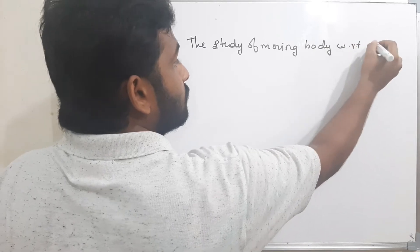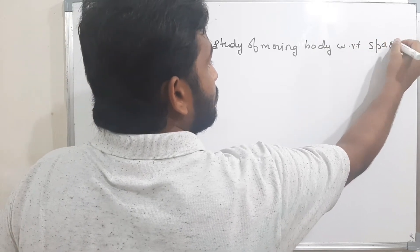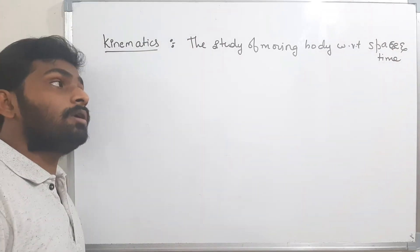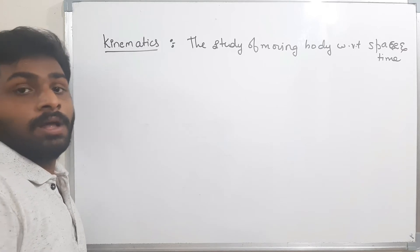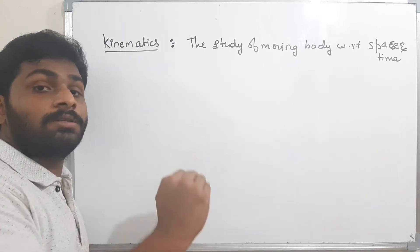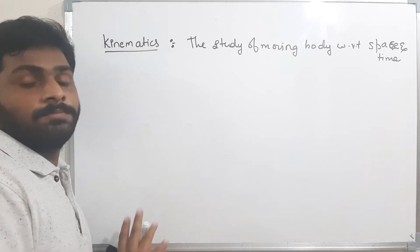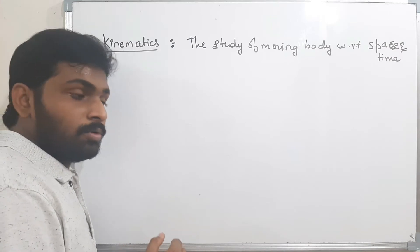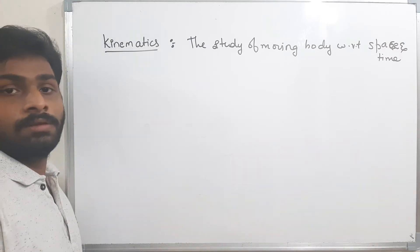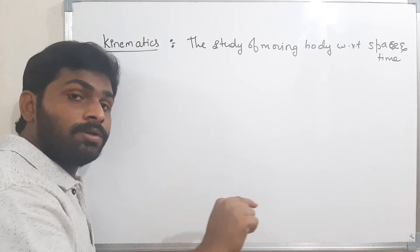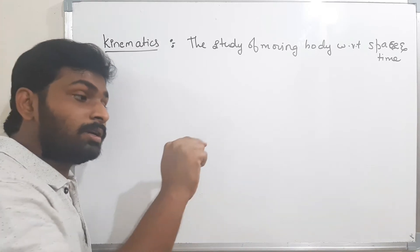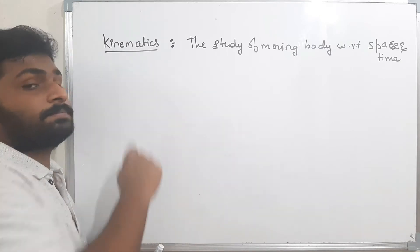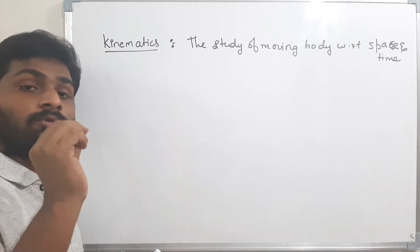Kinematics is the study of the moving body with respect to space and time. I won't bother about what made the body move. Assume I hit a football — the football may move in a projectile motion or in a straight line on the ground. I will study how the velocity of the body is changing, how the direction of the body is changing, but I won't bother what made the body move. That is kinematics.